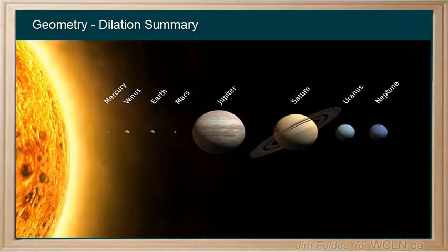We can make Earth the factor of 1 and relate all other planets by their dilation. For example, Jupiter's diameter is just about 11 times that of the Earth while Mars is about 1 half.